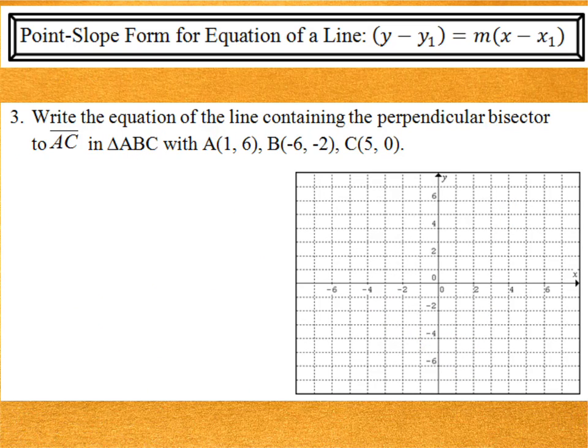Let's write the equation of the line containing the perpendicular bisector to AC in that triangle. So, let's draw the triangle. So, let's go 1, 6 to negative 6, negative 2. From there to 5, 0. And, from there back to where I started. There's A. There's B. There's C.